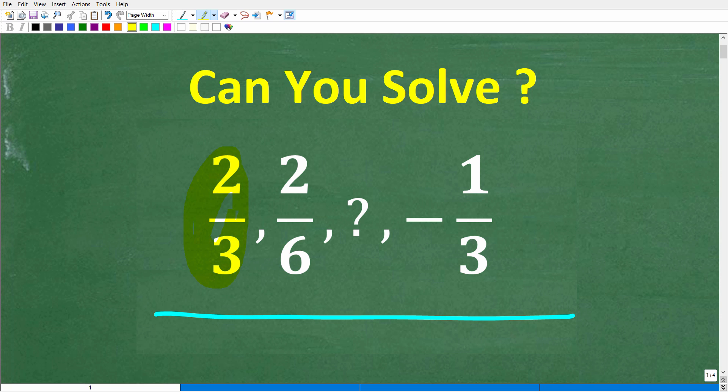So it starts off with two-thirds, then the next number in the sequence is two-sixths. And we're looking for the third number in this sequence, but we do know that the next number, or the fourth number in the sequence, is negative one-third.